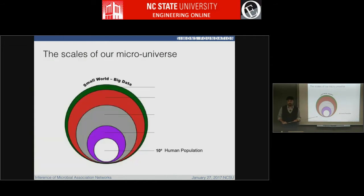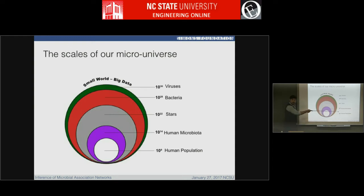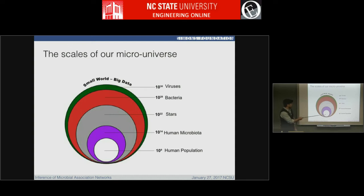Some of you may know that our living world is mostly bacteria and microbes. To give you a sense of scale, we have about 10 to the 9 people on this planet. If you compare that to the number of bacteria and microbiota living on our body, it's orders of magnitude more. Compared to the estimated number of stars in our universe, the number of bacteria and viruses on the entire planet is vastly more. We try to understand the biology and the interactions on the scale of the microbiome.